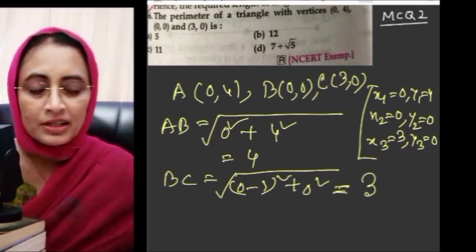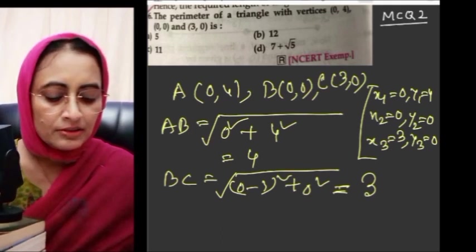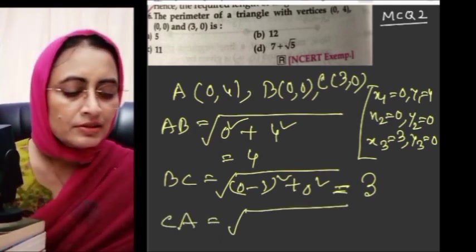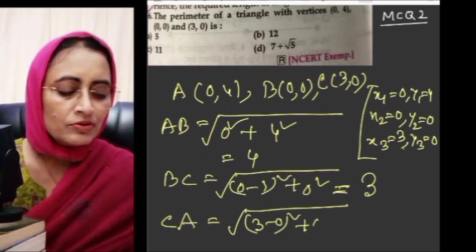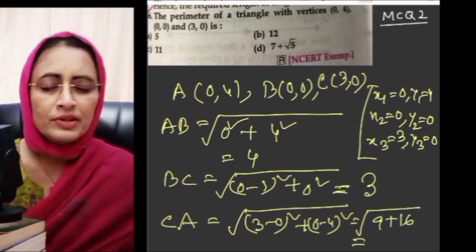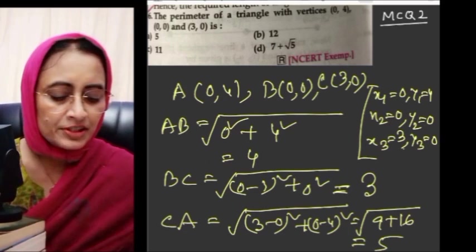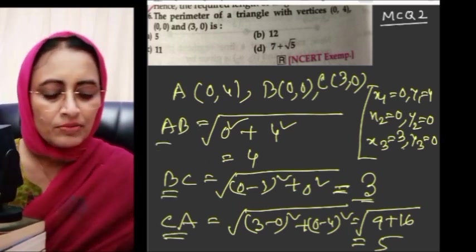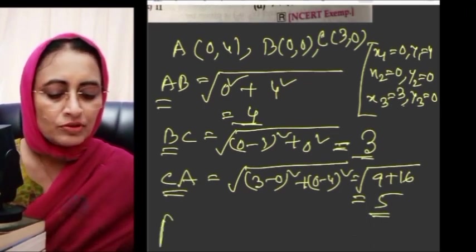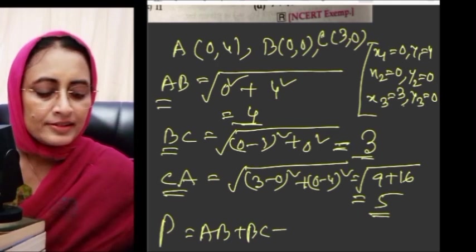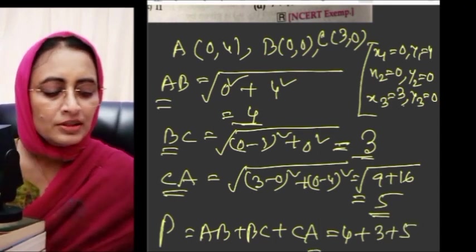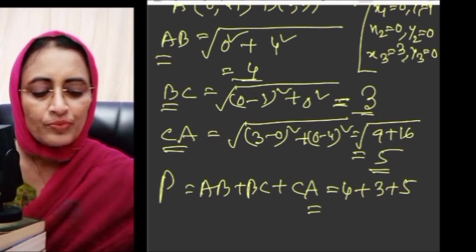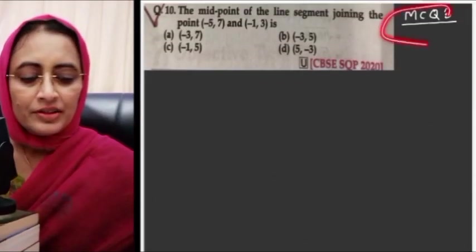CA equals square root of (3 minus 0) whole square plus (0 minus 4) whole square equals square root of 9 plus 16 equals square root of 25 equals 5. Therefore perimeter equals AB plus BC plus CA equals 4 plus 3 plus 5 equals 12. So option B is the correct option.